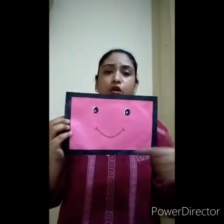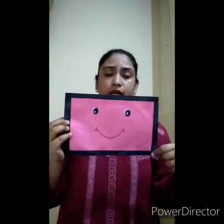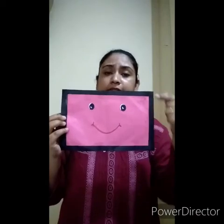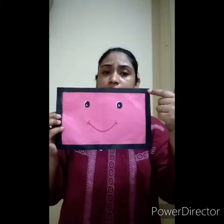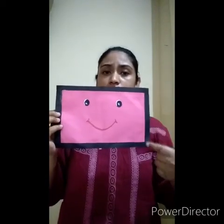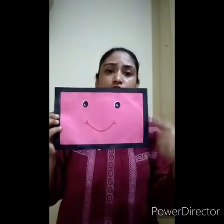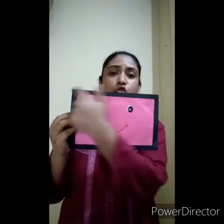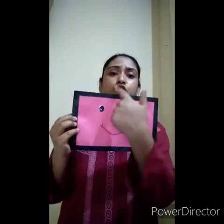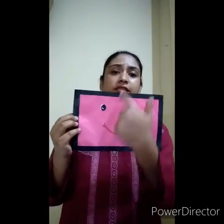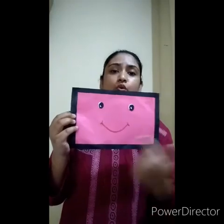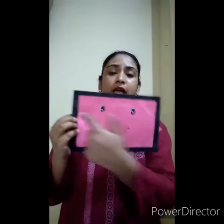Two sides are short and two sides are long. These sides are short, and these sides are long. So two opposite sides are equal, and this shape is called a rectangle.